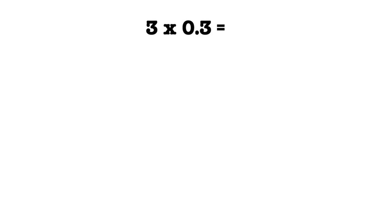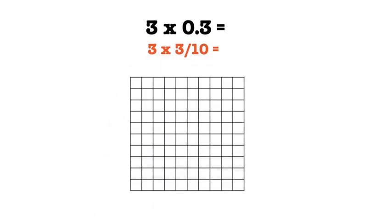Let's start by converting our decimal of three-tenths to a fraction. When we do that, we get three-tenths. Since our denominator is 10, we will use a 10 by 10 grid.